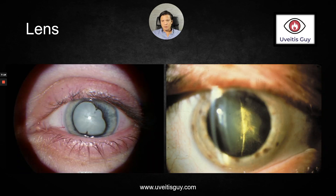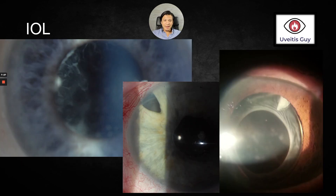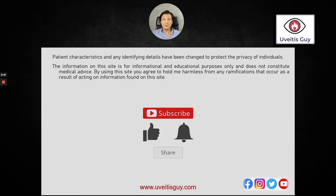The lens is important — it will many times prevent you from seeing what's going on in the back of the eye, and will also show you the chronicity. If the patient is pseudophakic, it is also important because it may be the reason why the patient has inflammation. I sincerely appreciate you stopping by. I'll see you in the next one.